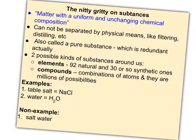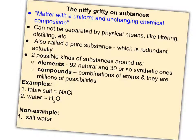If you look up the definition for a substance, the most common definition says it's matter with a uniform and unchanging chemical composition. That means a substance cannot be separated physically by filtering, distilling, or evaporating. It's also known as a pure substance — though that's actually redundant, because the very word substance means it's pure. It has the same composition all the time.